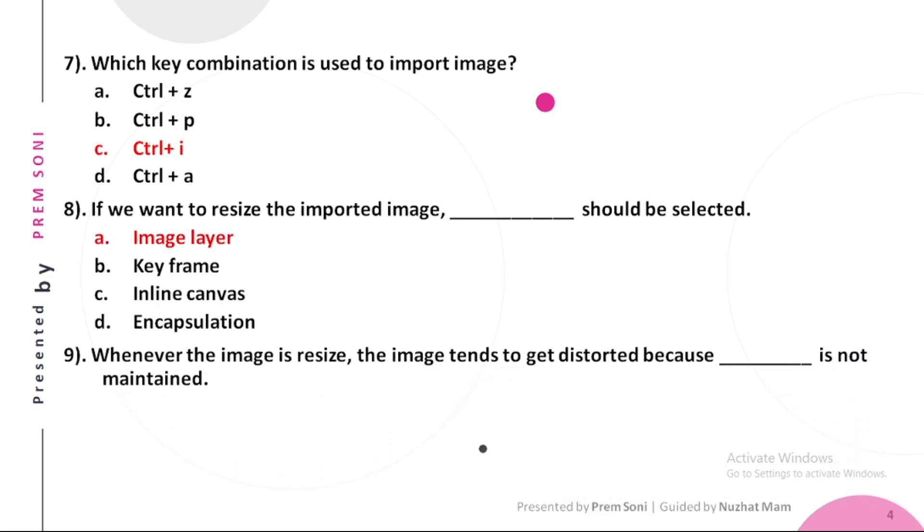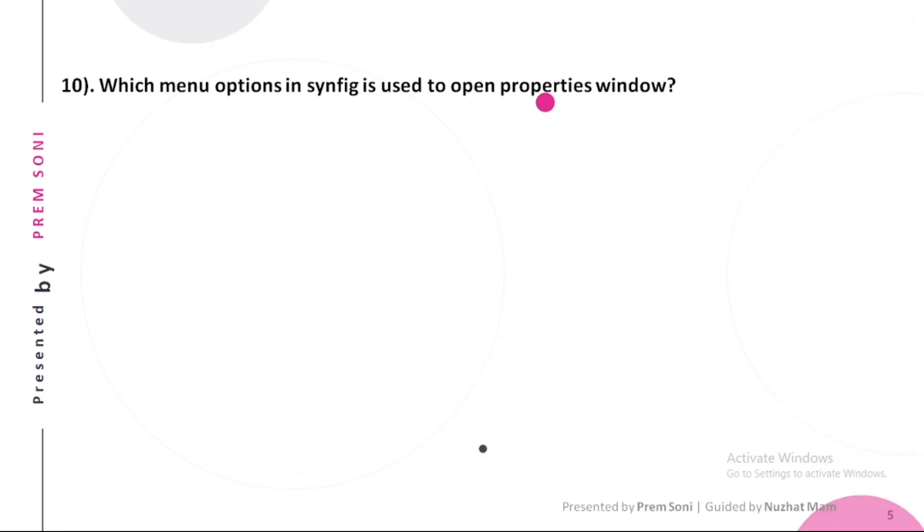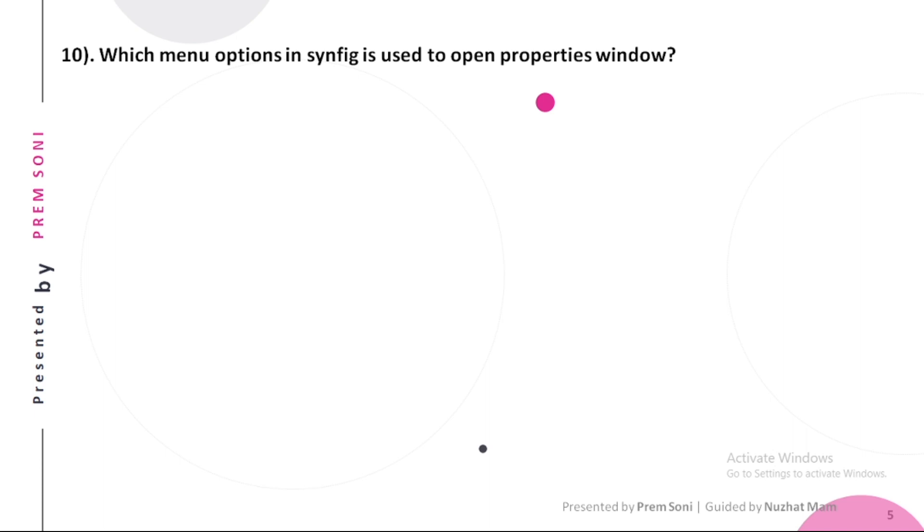Ninth, whenever the image is resized, the image tends to get distorted because dash is not maintained. Options are: a. Image log, b. Resize ratio, c. Aspect ratio, d. Inline canvas. The answer is Aspect ratio. Tenth, which menu option in Synfig is used to open properties window? Options are: a. Caret edit properties, b. Caret change properties, c. File change properties, d. File render. The answer is Caret edit properties.